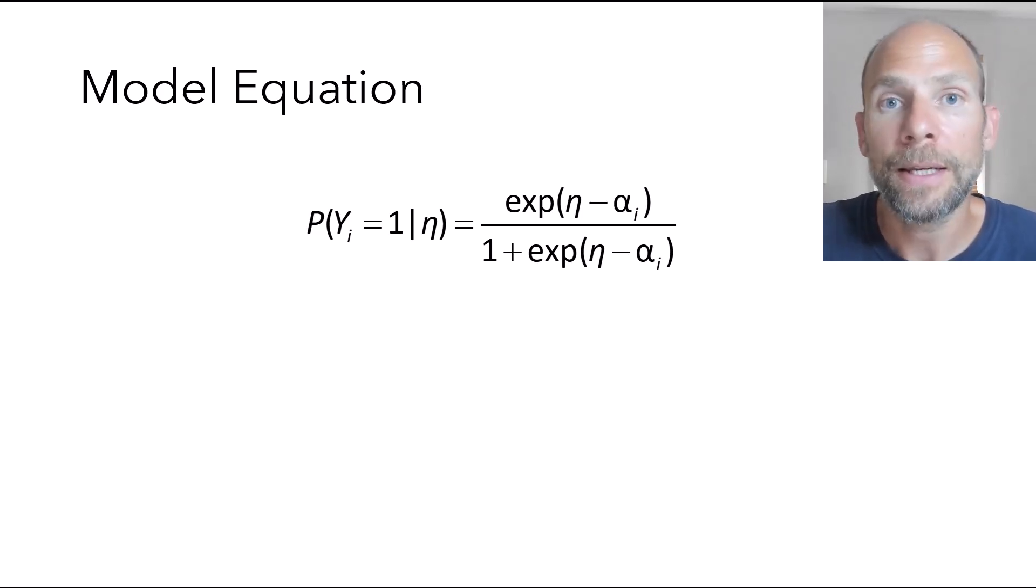And the reason is that in the Rasch model, the items cannot differ in their discrimination. They can only differ in difficulty. In other IRT models, such as the two-parameter logistic model or Birnbaum model, you would have a slope parameter as well.